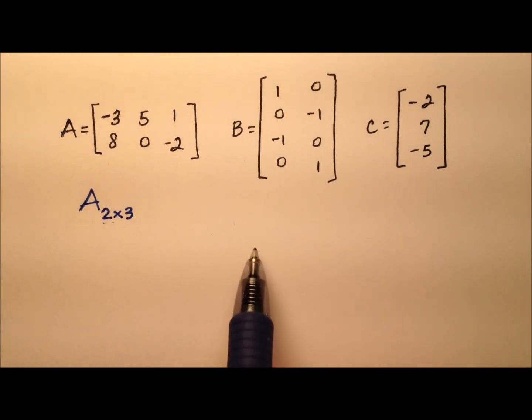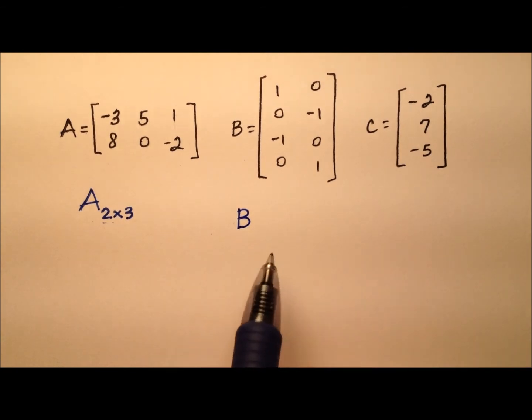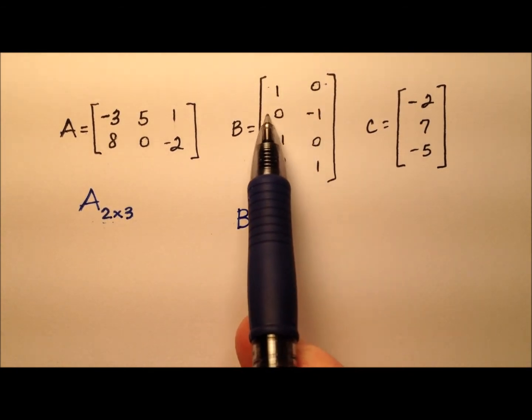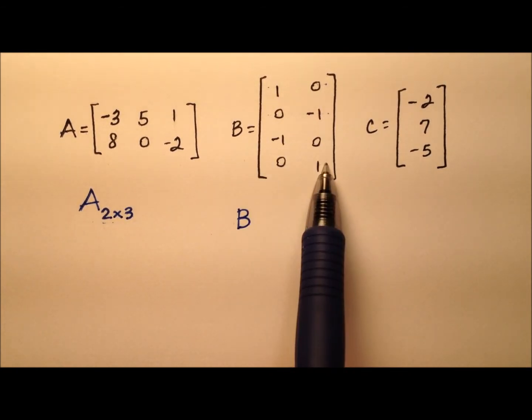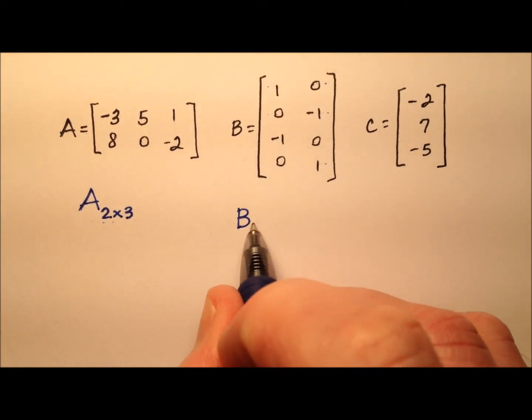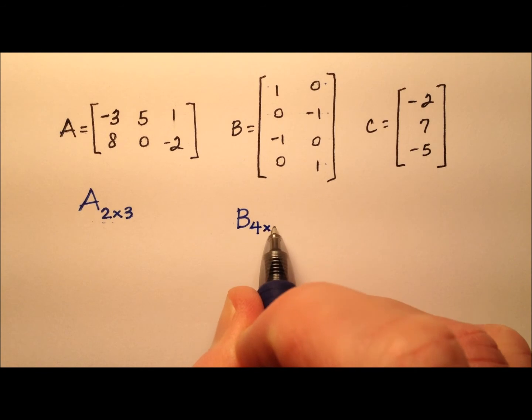Let's look at matrix B. B is, and it looks like 1, 2, 3, 4 rows, and 1, 2 columns. So matrix B is going to be a 4 by 2, just like that. And once again, we use a capital B right here.